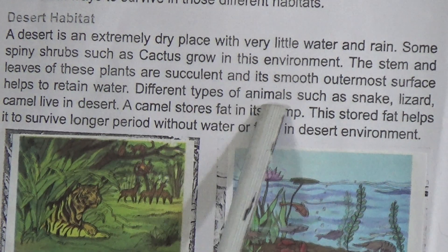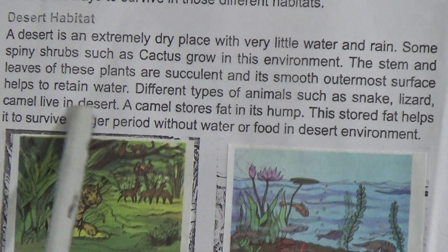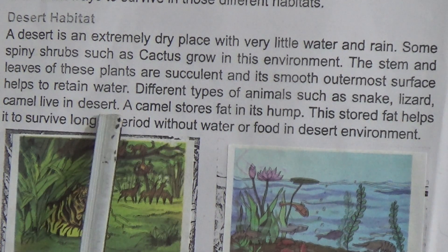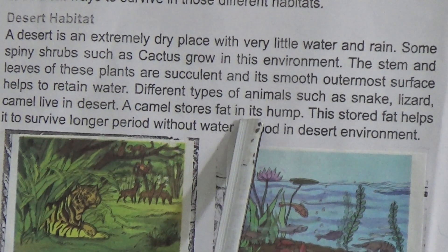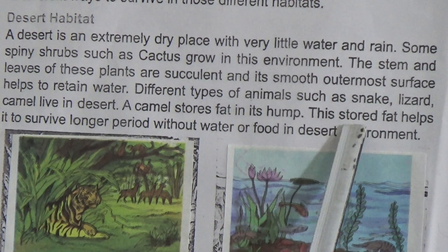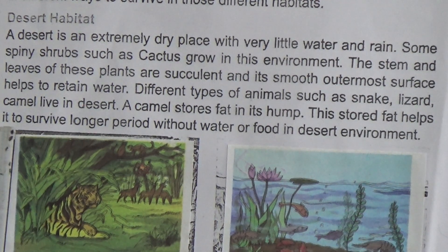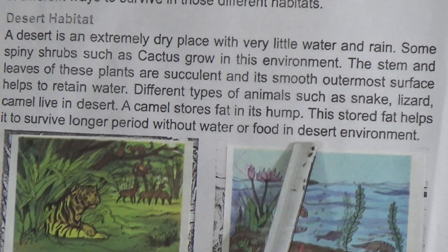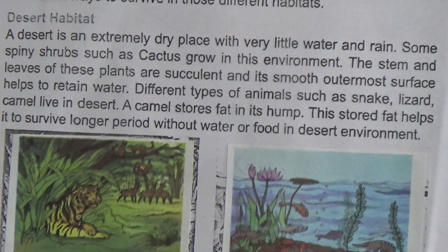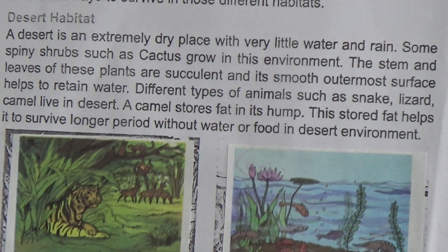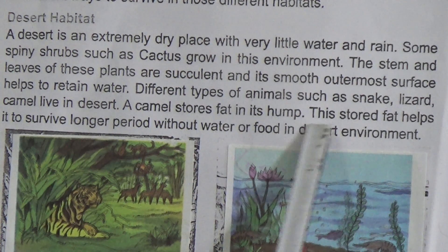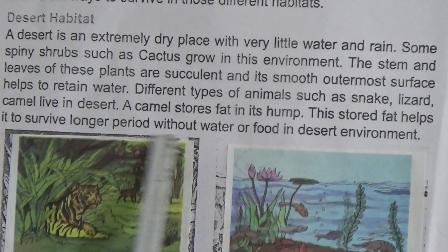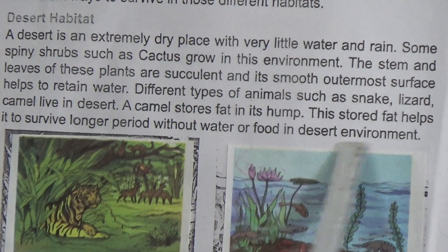Different types of animals such as snake, lizard, and camel live in the desert. A camel stores fat in its hump. This stored fat helps it to survive for a longer period without water or food in the desert environment.